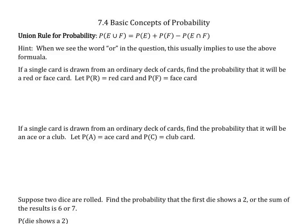Section 7.4, basic concepts of probability. For this section, we're mainly going to use the union rule for probability, which states that if we want the probability of an event E union another event — our hint is when we use the word 'or,' we want this or that to happen — we're going to add the probability of the first event plus the probability of the second event, and then subtract the probability of those two together. When we see the word 'or' in the question, this usually implies we're going to use this formula.